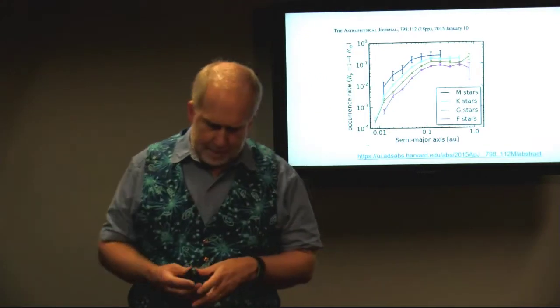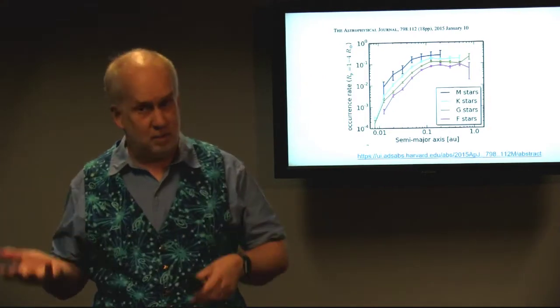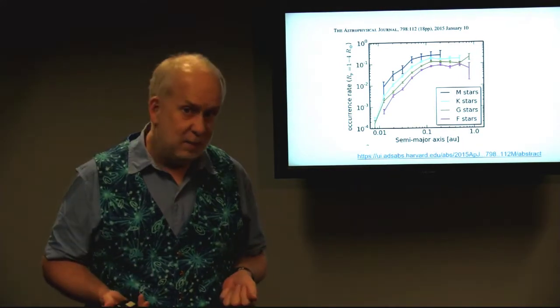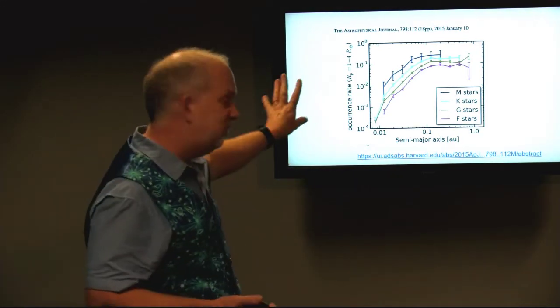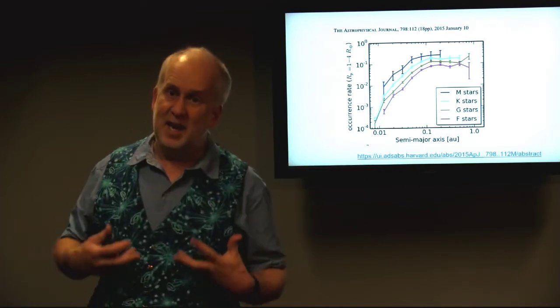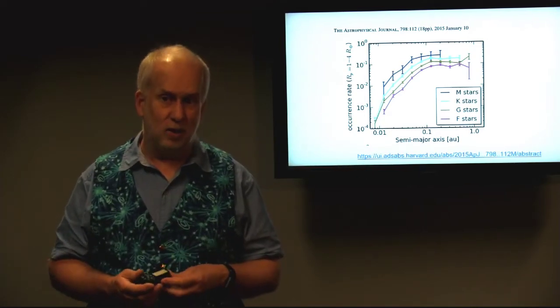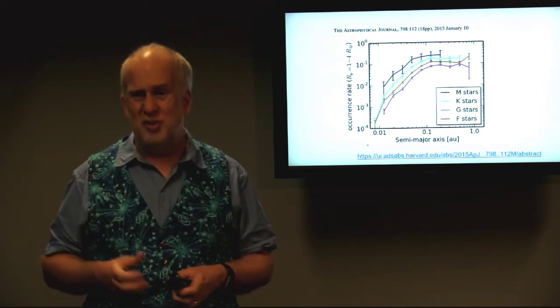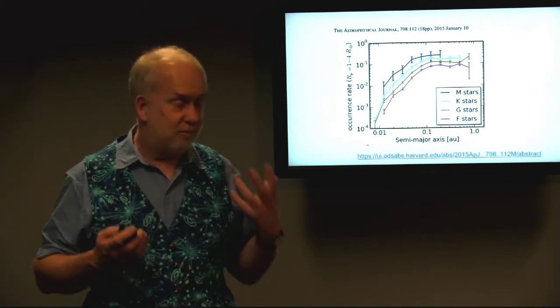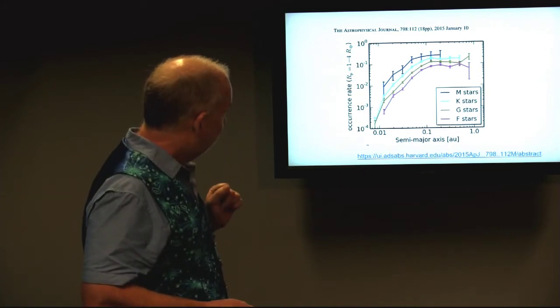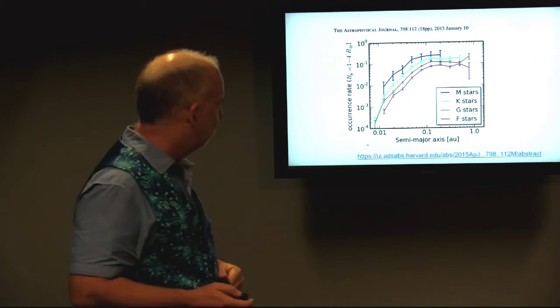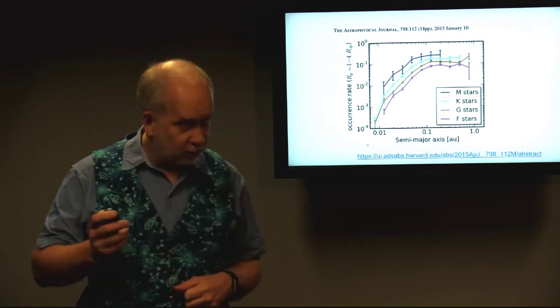So it seems planets are rarer closer in, more common further out, and that's the opposite of what's always been seen because when you look at the data you will tend to see the ones closer, but this is taking out the effect of the biases in our samples. And it seems that the small cold dwarfy red stars have more perhaps than the big bright powerful blue stars. All very interesting.